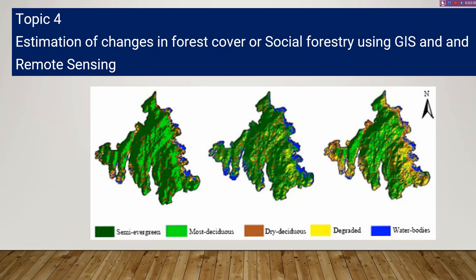Number four is estimation of changes in forest cover, or social forestry, using GIS and remote sensing. This is an important topic because human interaction causes the loss of forest cover areas in our society. If we want to protect forests from destruction and conserve them, we must determine how much forest land has been degraded and how much remains available. Through geospatial technology, we can easily get help from GIS and remote sensing to find this out.